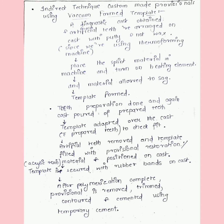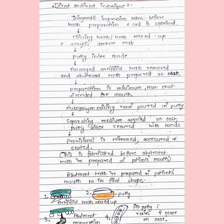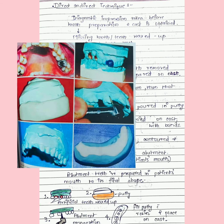Coming to the last technique: direct-indirect technique or combination of two. Here we take a diagnostic impression before tooth preparation is done, then we get a cast. The missing tooth is waxed up with acrylic denture teeth, then putty is made. Artificial teeth are removed and the abutment is prepared on the cast. Earlier we were preparing abutments intra-orally, but here we're preparing the abutment on the cast. The preparation is minimal—it is less than the intended preparation in the mouth.